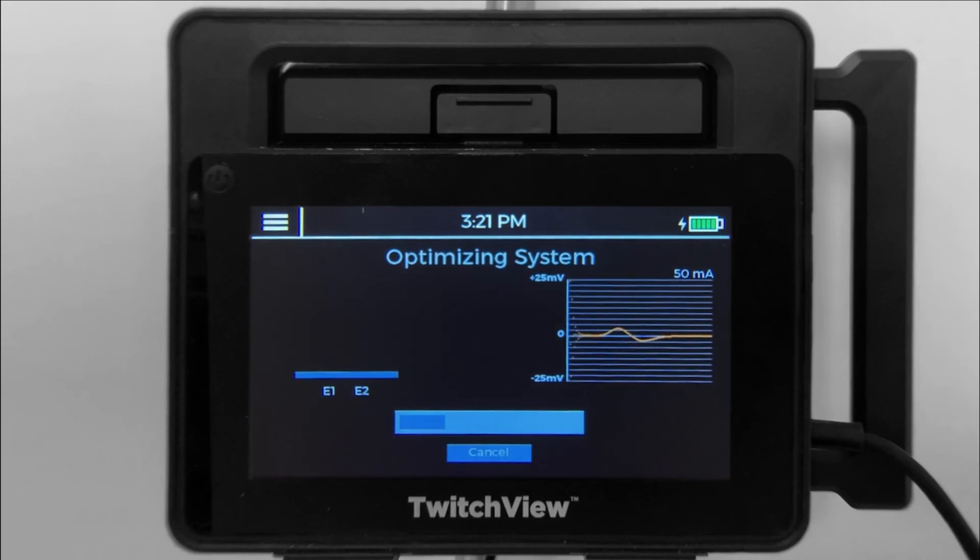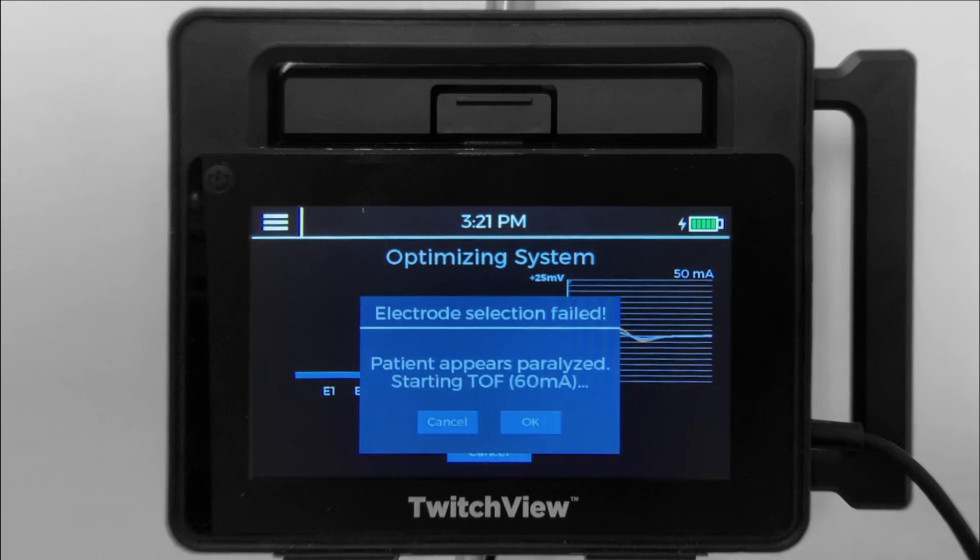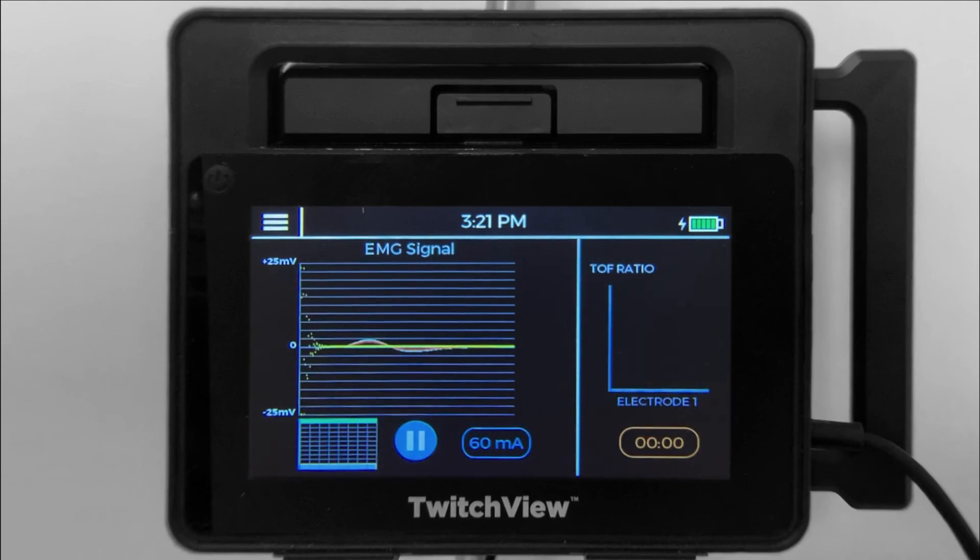If the patient is paralyzed prior to startup, the monitor will default to 60 milliamps and measure electrode 1. The measurements will be accurate, but you will not see the pre-paralytic blue bar.